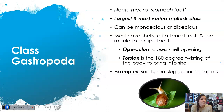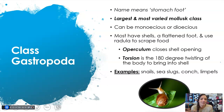They also have something called an operculum. So if you've ever picked up a seashell and you see kind of like a darker structure and you can't go in the shell and it's covered, that's the operculum — it closes that opening and keeps the animal safe inside the shell. Torsion is the term for how the animal moves into the shell; they actually twist 180 degrees to bring their body into the shell. Examples of members of this class are things like snails, sea slugs, conchs, and limpets.